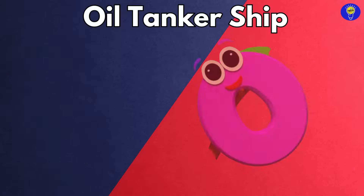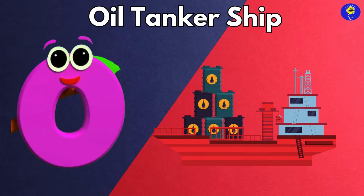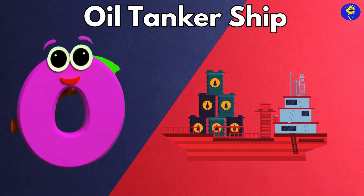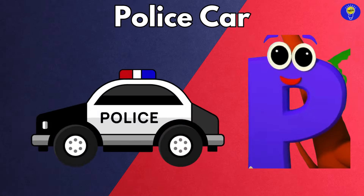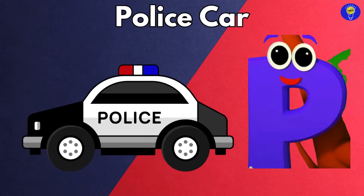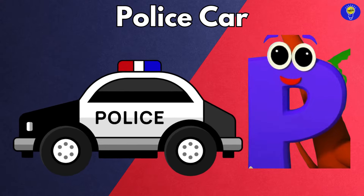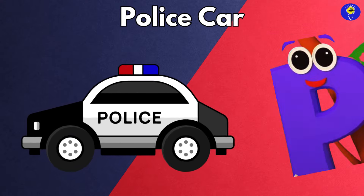O is for oil tanker ship, oil tanker ship. P is for police car, police car.